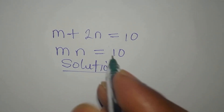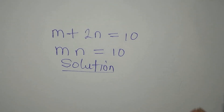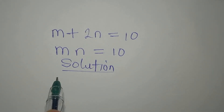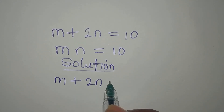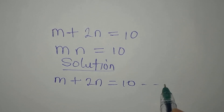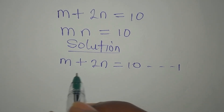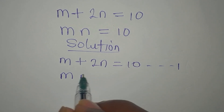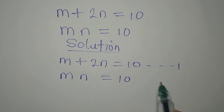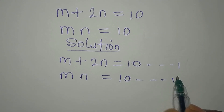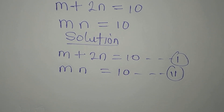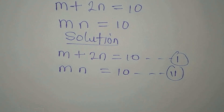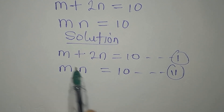Hello everyone, let's provide the solution to this problem simultaneously. Equation one is M plus 2N equals 10. Equation two is MN equals 10. To solve the equations, we are going to use the substitution method.